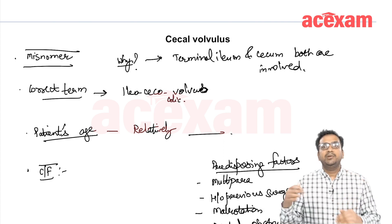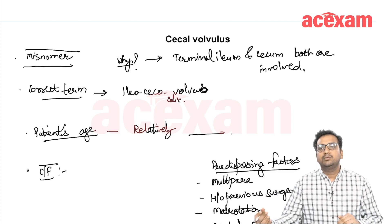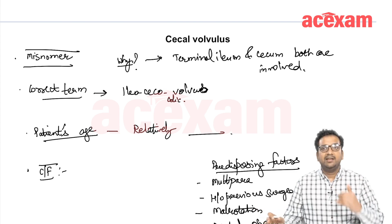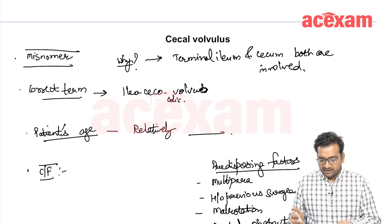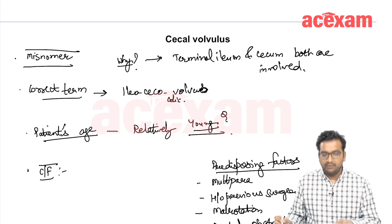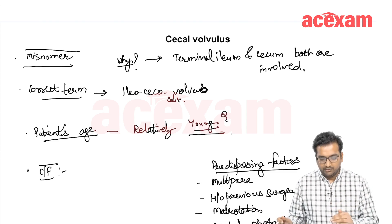When compared with sigmoid volvulus, sigmoid volvulus is generally seen in old patients who are ill, hospitalized, taking opiates or neuroleptics. Here, the patients are relatively young. This is important — the patient is of a relatively younger age group in cecal volvulus.